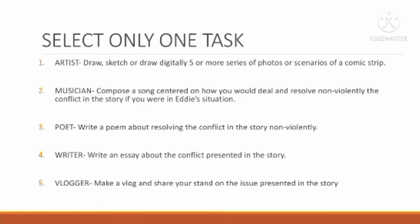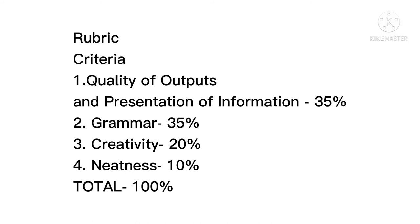For your performance task, you are going to select only one task. Number 1, Artist: draw or sketch digitally five or more series of photos or scenarios of a comic strip. Number 2, Musician: compose a song centered on how you would deal and resolve nonviolently the conflict in the story. Number 3, Poet: write a poem about resolving the conflict in the story nonviolently. Number 4, Writer: write an essay about the conflict presented in the story. Number 5, Vlogger: make a vlog and share your stand on the issue presented in the story. The rubric: quality of output and presentation of information 35%, grammar 35%, creativity 20%, neatness 10%, total 100%.